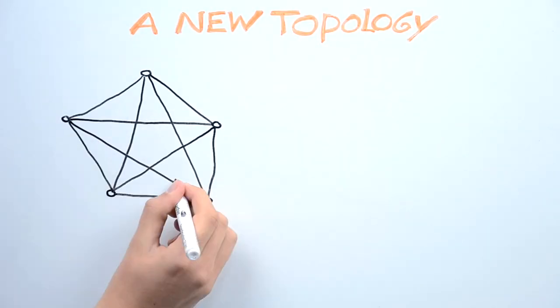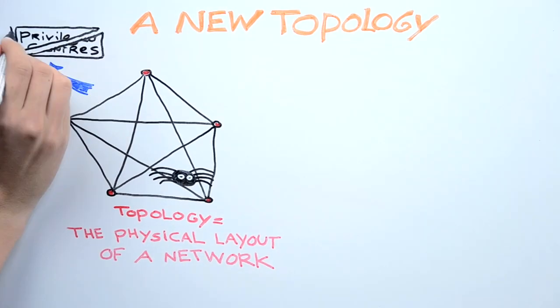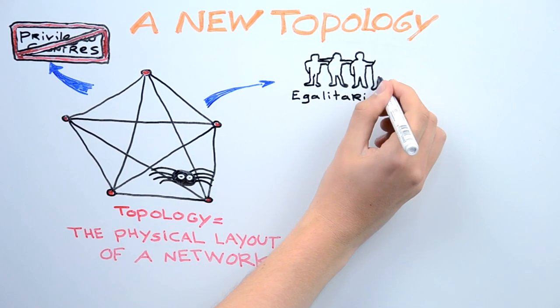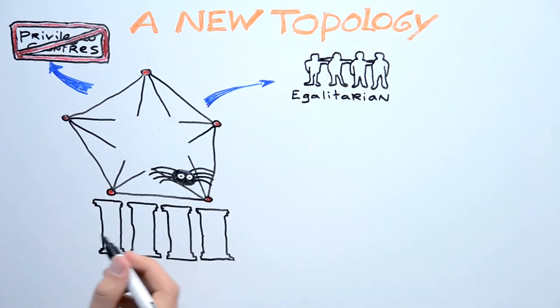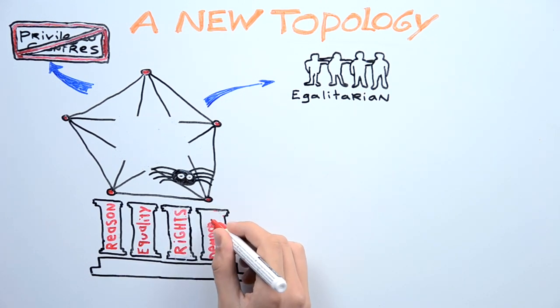We need a new topology, a topology without privileged centers, a topology that is egalitarian in nature, a decentralized topology based on reason, on equality, on human rights, and on democracy.